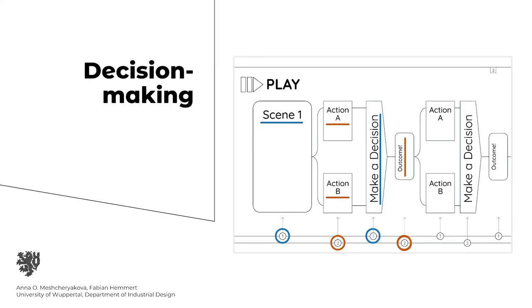Decision making was another integral part of the game. The content blocks are distributed in such a way that one team, highlighted in red, provides options for actions that can be taken in a scene, while the other team, highlighted in blue, has to decide which one to take. One option has a positive and the other a negative impact on the story, and the team providing the options has to prescribe yet not disclose this to the other team. Thus, the blue team is left to guess on the meaning and the impact of the actions suggested by team red.